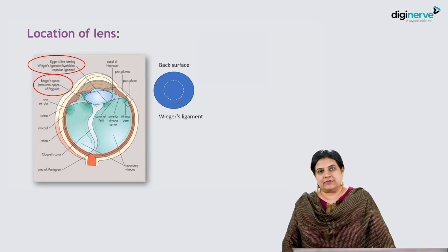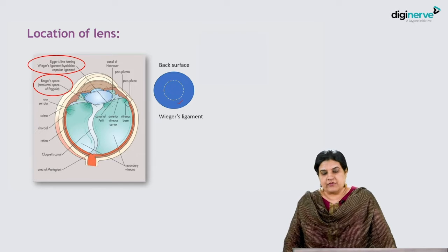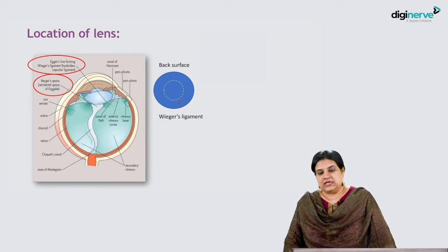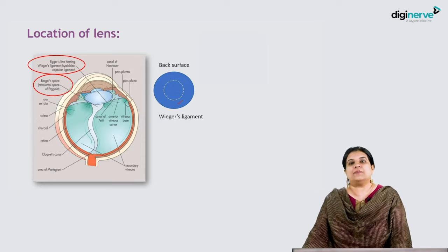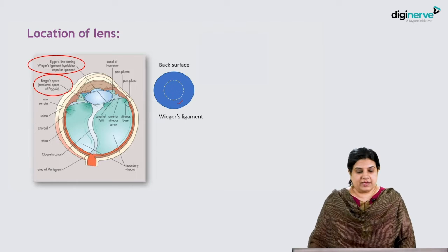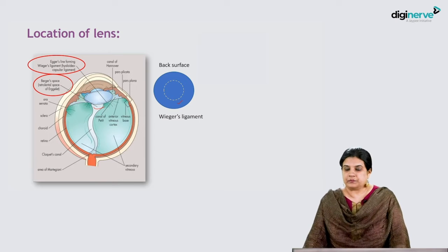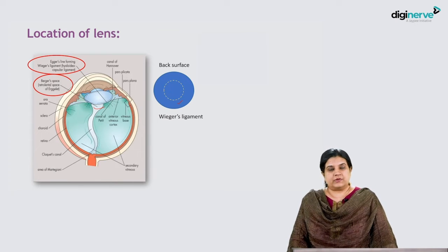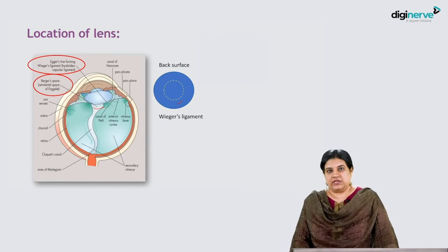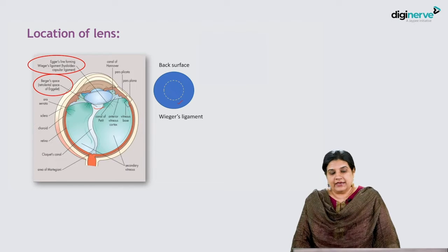Wieger's ligament is not a true ligament, and as age progresses, the attachment reduces. There is a potential space between the posterior lens capsule and Wieger's ligament called Berger's space. The strength of Wieger's ligament decreases with age.